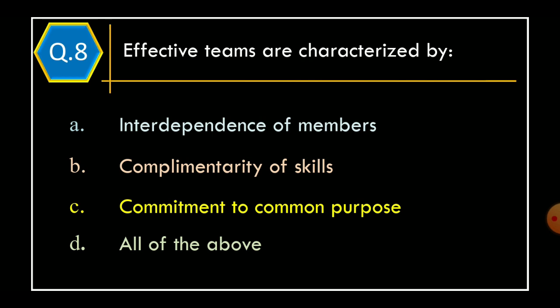Question 8: Effective teams are characterized by - Option A: Independence of members; Option B: Complementary of skills; Option C: Commitment to common purpose; Option D: All of the above. The correct option is Option D, All of the above.